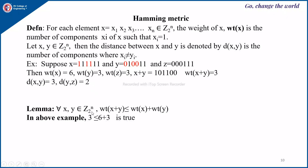Lemma: for all x, y belonging to Z2 raised to n, the weight of x+y is always less than or equal to weight of x plus weight of y. In the above example, Wt(x+y) is 3, whereas Wt(x) is 6 and Wt(y) is 3, so 3 is less than or equal to 9, which is true.